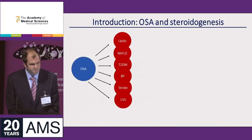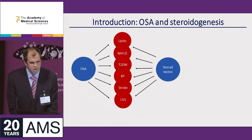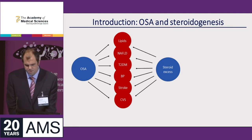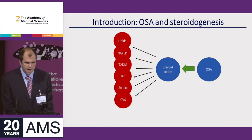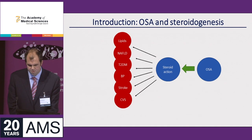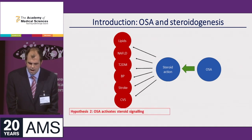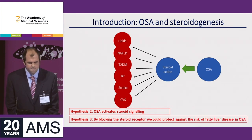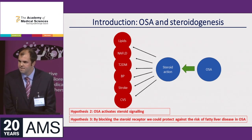A lot of the metabolic complications we see in obstructive sleep apnea are very similar to what we see in conditions of steroid excess like Cushing's. We started to wonder whether some of the metabolic consequences of OSA might be via effects on steroid action or steroid signaling. My second hypothesis is that obstructive sleep apnea activates steroid signaling, and I questioned whether by blocking the steroid receptor we could protect against the risk of fatty liver disease in those with OSA.